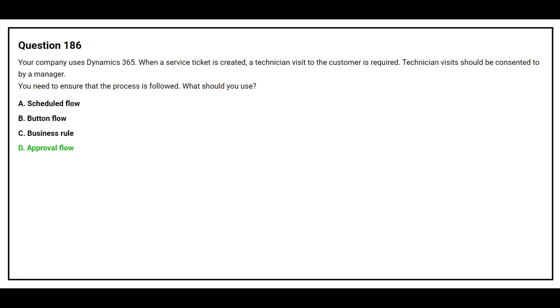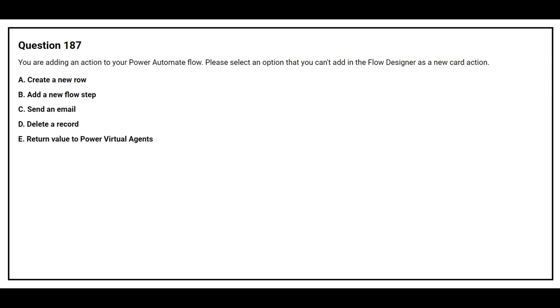The correct answer is Option D: Approval flow. Question number 187. You are adding an action to your Power Automate flow.